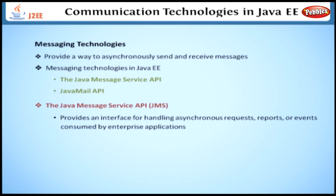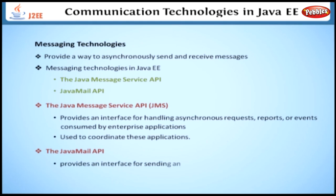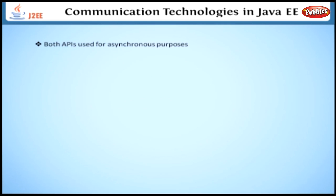Messaging technologies are used to coordinate distributed applications. The Java Mail API provides an interface for sending and receiving messages for users. Each of the APIs can be used for asynchronous purposes. If speed and reliability are the primary requirements, then JMS will be preferred.